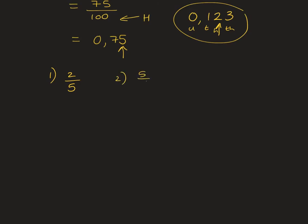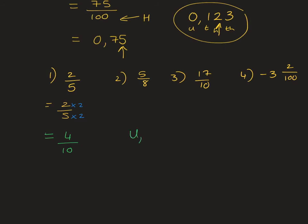For number two, change 5 over 8. Number three, 17 over 10. Number four, negative 3 and 2 over 100. Let's start with 2 over 5: multiply 5 by 2 to get 10, and do the same to the top to keep the value — 2 times 2 is 4, 5 times 2 is 10. With 4 over 10, the 4 goes right after the decimal and we fill in with a zero, giving 0.4.